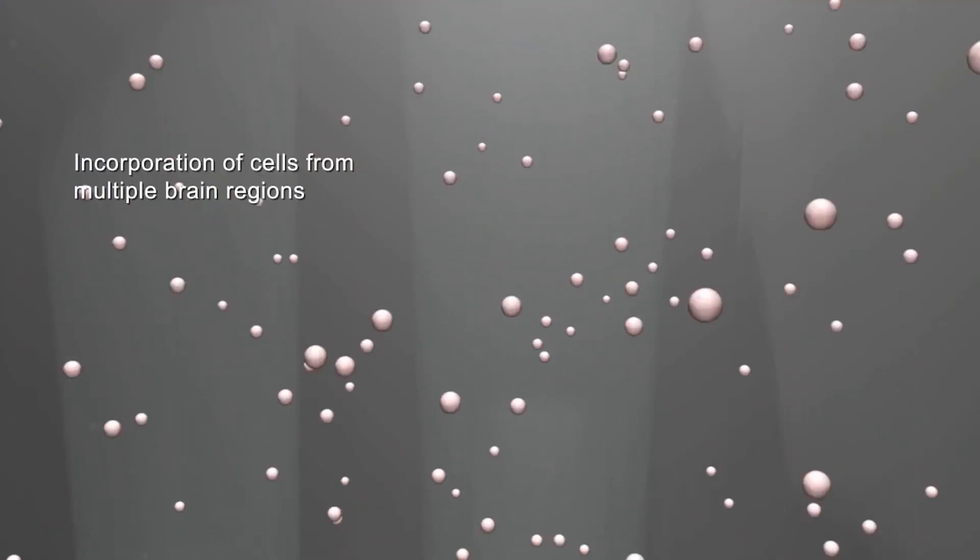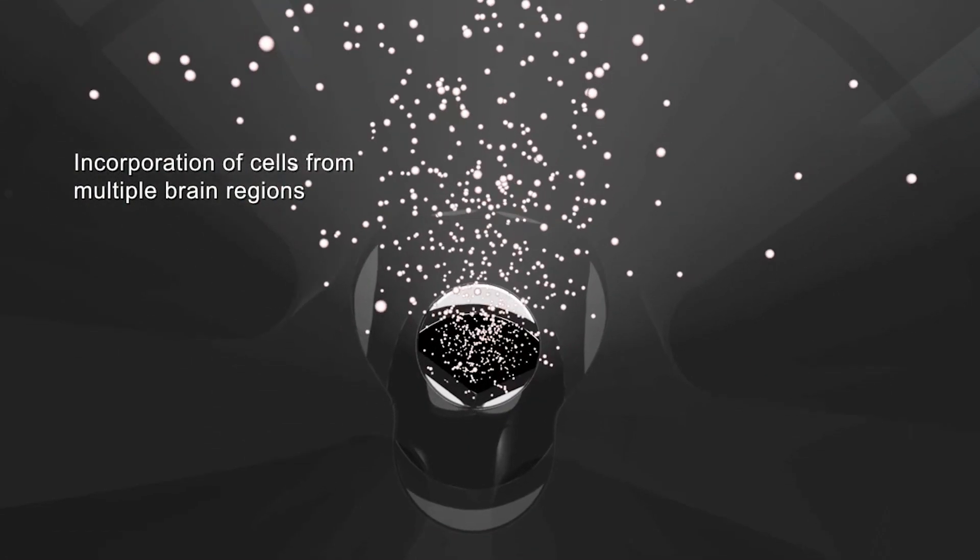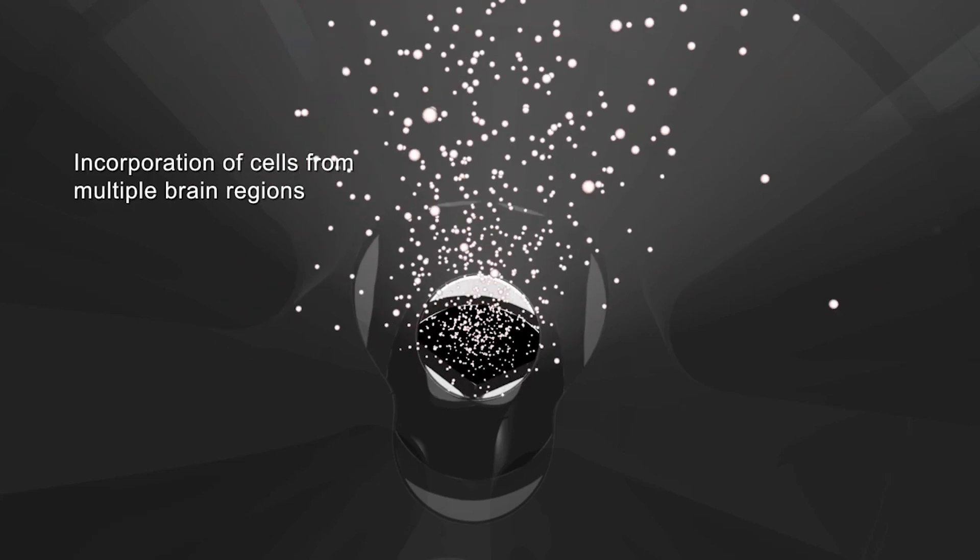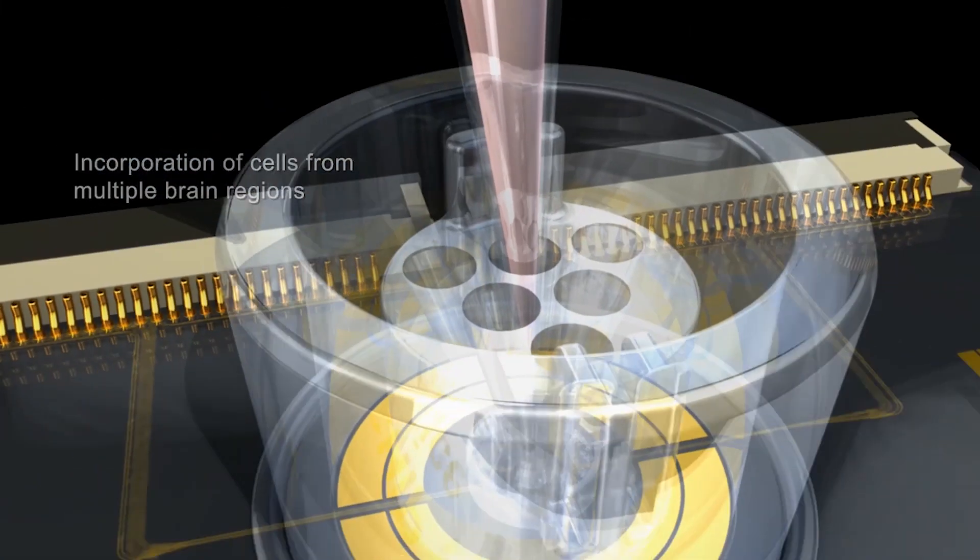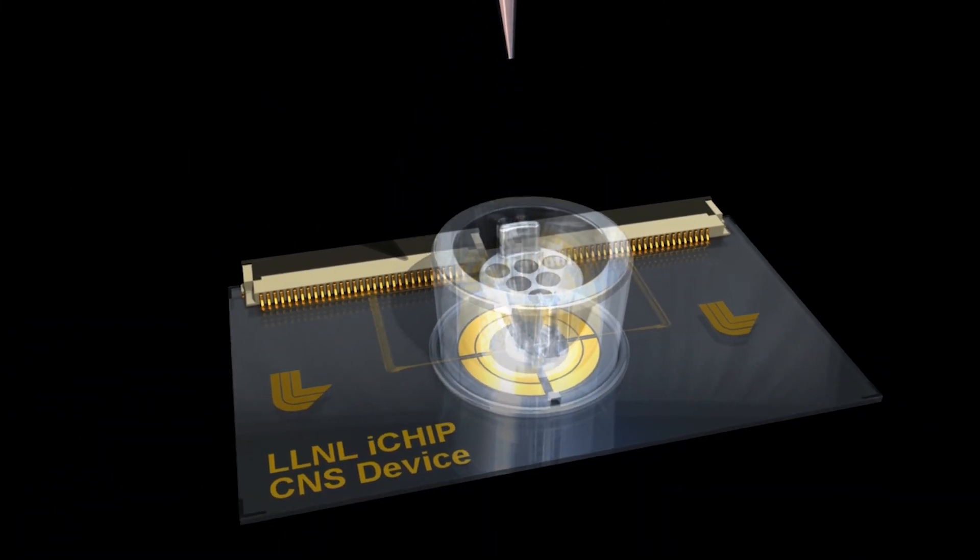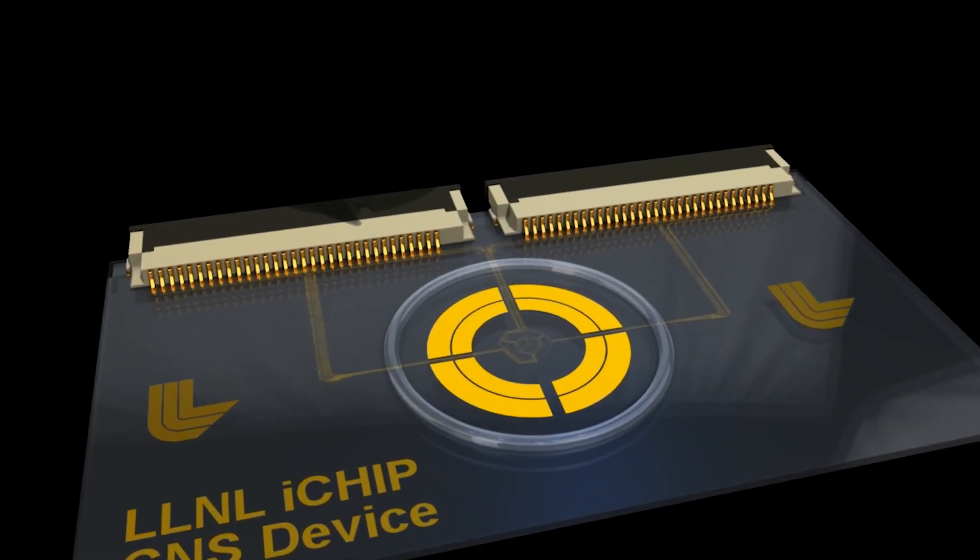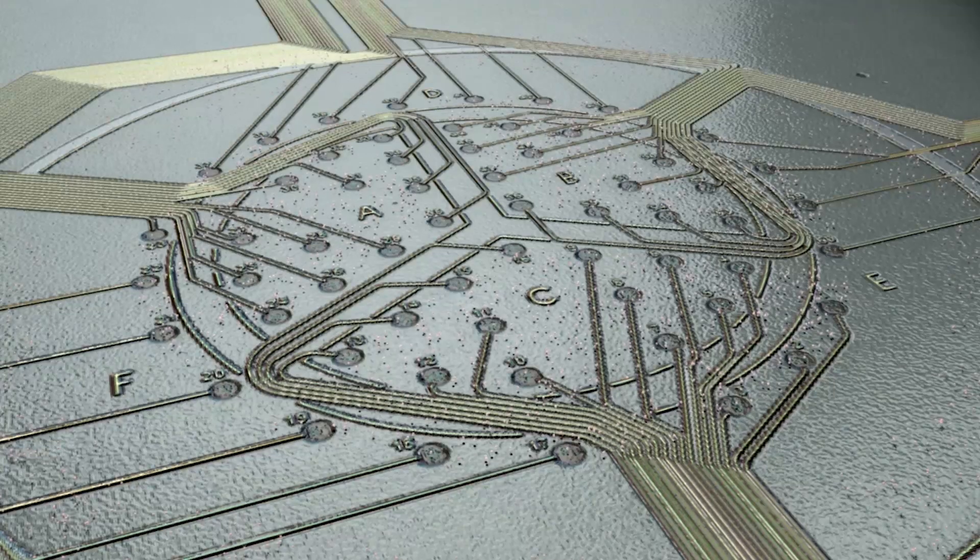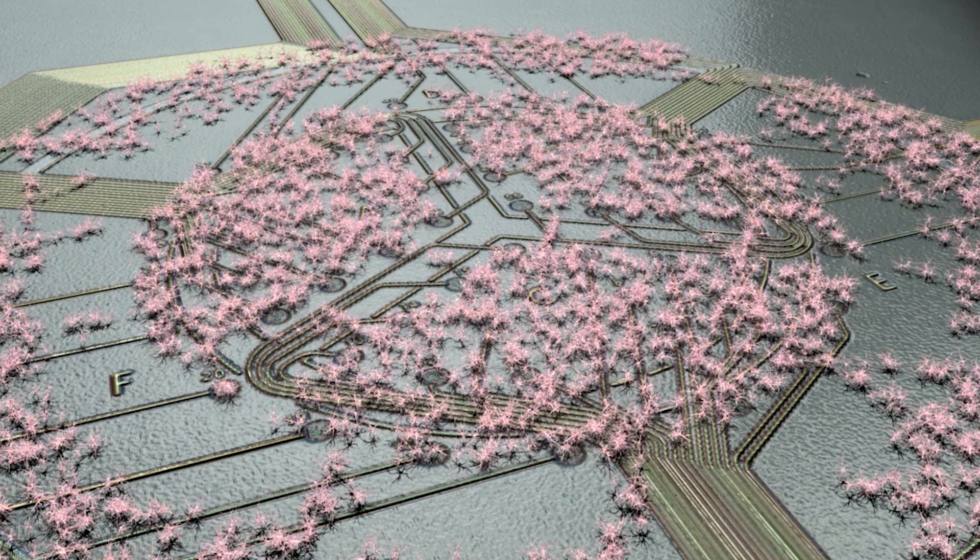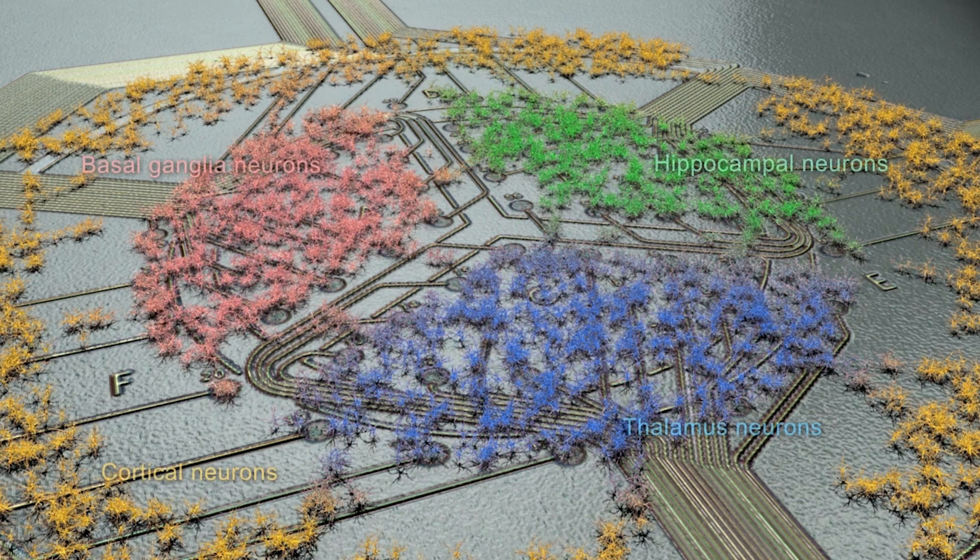These cells are grown on multi-electrode arrays that pick up the minute electrical signals neurons generate when they communicate. By having an array of electrodes across the device with cells grown across these arrays, we can understand how neurons talk with one another and form intricate networks.